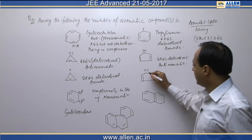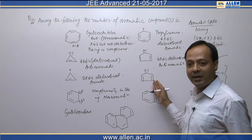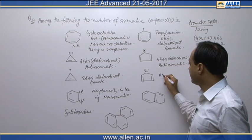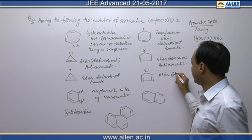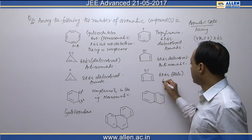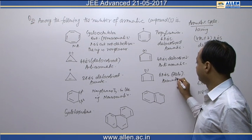This compound is the cyclopentadienyl anion. As it has 6 pi electrons delocalized, it is aromatic in nature.